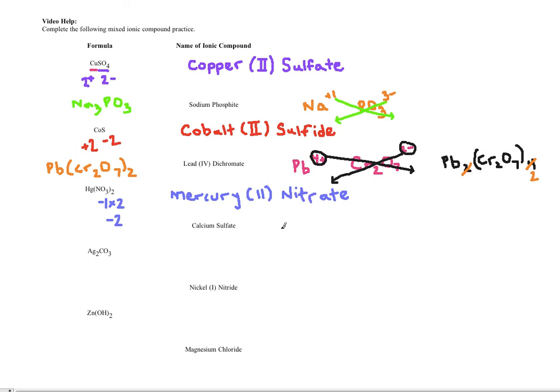For the next one, calcium sulfate. I know the charge of calcium, it's 2+. Sulfate is SO4 with a 2 minus charge. And so what happens when I cross my charges, the 2 becomes the subscript for the SO4, the 2 becomes the subscript for the Ca. So since I have Ca2SO42, I can reduce that, and it'll just become CaSO4.